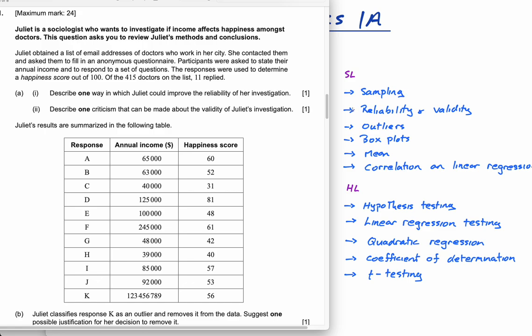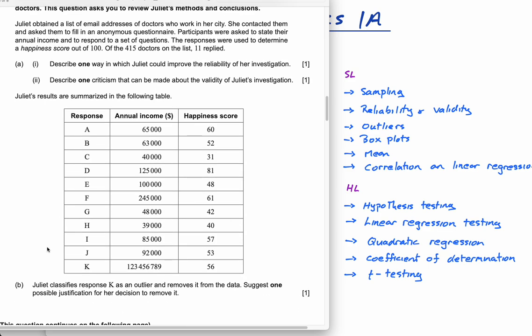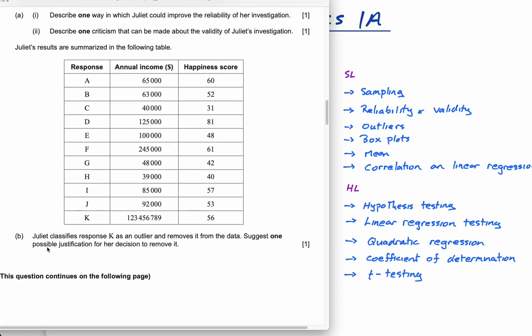These are actually in the HL course, but certainly no reason you can't talk about them in an SL IA as well. Describe one criticism that can be made about the validity of Juliet's investigation. Obviously this is not a perfect situation at all. She's got 11 responses. So it's not a perfect investigation by any stretch of the imagination. But your investigation doesn't have to be perfect. In fact, it's better if it isn't perfect because you can be critical about it and show critical reflection.